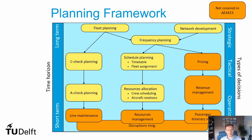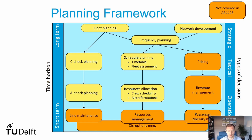We then have the operational level, which regards the control of operations on the day that we are running the flights. There we need to plan the line maintenance, which is in the short term because there are always new tasks coming up from faults found by pilots or any incident that occurs. We have resource management — managing our resources in a way that we try to stick with our initial plan but cope with disruptions if they happen. And we need to look after passengers, because we sold a ticket and an itinerary, so we need to manage their itineraries to make sure passengers get to their destination as planned. This process at the day of operations can also be called disruptions management.